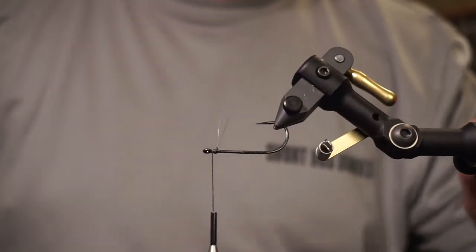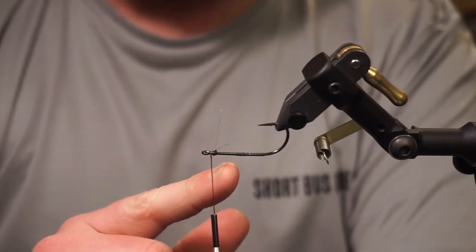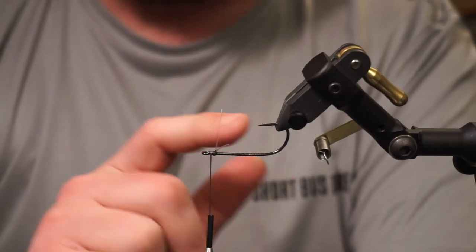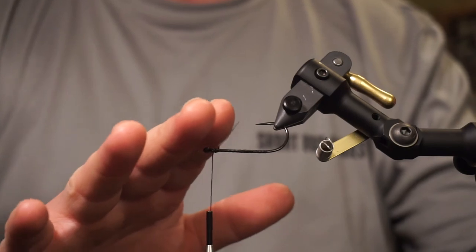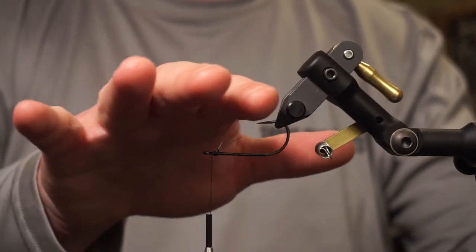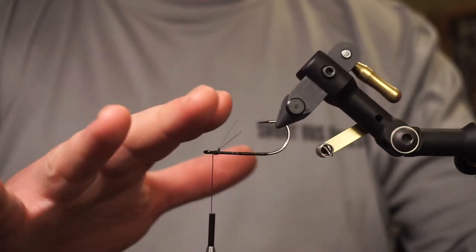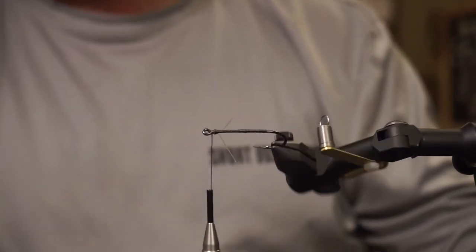Then as we get that tied off, we can come in here and trim to length. A lot of crab and shrimp patterns have the eyes down here, so your hook point would ride up. If you're pulling this through a lot of grass, it'd be really easy to have the grass hit these little weed guards and push things out of the way of the hook as it comes through the water.